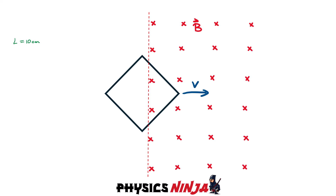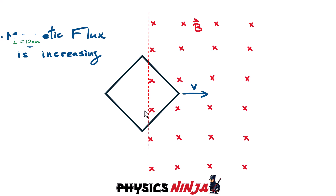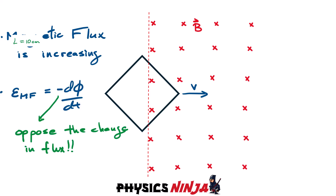As this loop moves inside the field region, you have a loop that is entering a magnetic field, which means there is now magnetic flux that is increasing as this loop moves — more and more magnetic field lines are going through this loop. Faraday tells us that whenever there is a magnetic flux that is changing with respect to time, we are going to induce an EMF in this loop. This is Faraday's law: the induced EMF equals minus the change in flux with respect to time. That negative sign is important because it tells us that the EMF will be in the direction that opposes the change in flux.